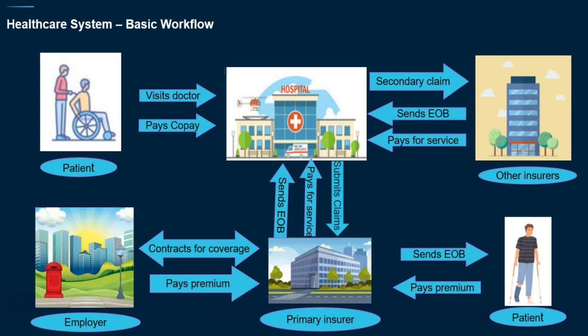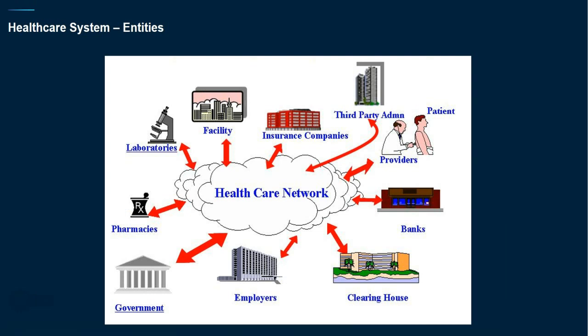The process remains the same — based on what kind of benefit plan the companies provide and what benefits they offer, the patient pays the copay amount and gets the service. Employers have different kinds of policies and the government also covers different policies. The parties and entities that participate in this healthcare network include facilities, laboratories, insurance companies, third-party administrators, providers, patients, pharmacists, employers, clearinghouses, banks, and government.